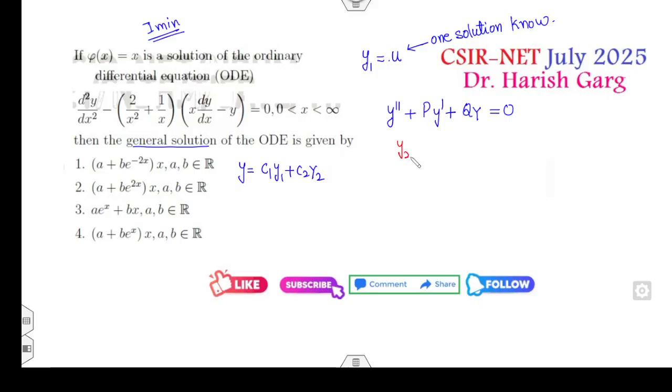What is Y₂? Y₂ is U times V, where U is my first solution and V is found by (1/U²) times the integral of e^(-∫P dx). Where P is the coefficient of Y'. If you compare the given differential equation, can you find P? P is minus 2/(x²) + 1/x times x. I can take the LCM, it will be (2+x)/x. This is my P.